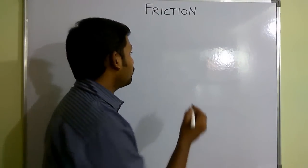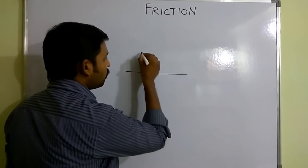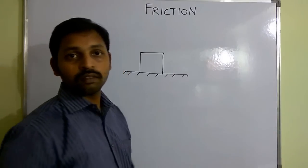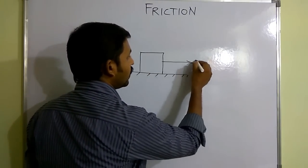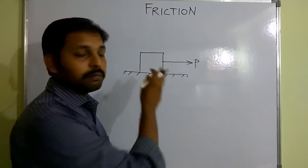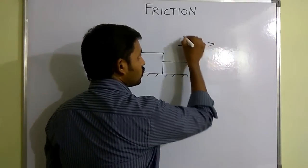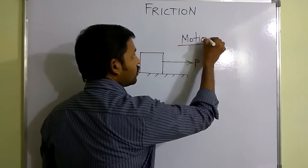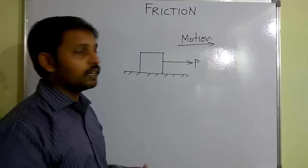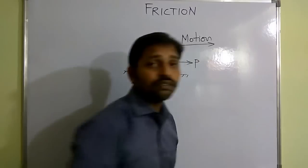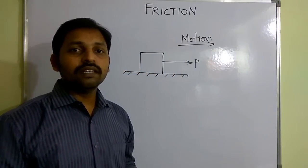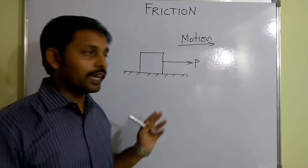To explain the concept of friction, I am considering a block on a horizontal surface. Let P be the applied force in this direction. When I apply force P, the object is able to move along the positive x direction. When I consider the free body diagram of this block, we need to remove all the surface contacts and replace them by means of reaction forces.